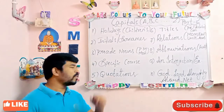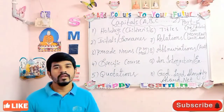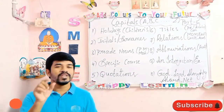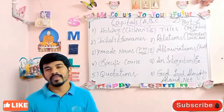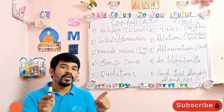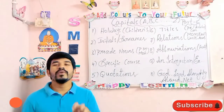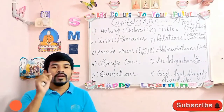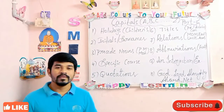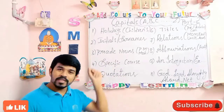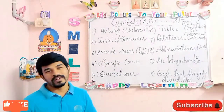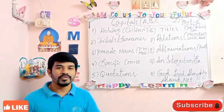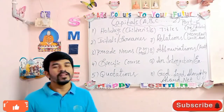Coming to the fifth rule: quotations. Whenever you are writing quotations — any word or any sentence in quotation marks — the first letter must be in capital, whatever the word or sentence it is. If a sentence is in quotations, the first letter must be in capital. These are the five rules where you have to use capital letters. I hope it is clear to you — start using them whenever you are writing English.